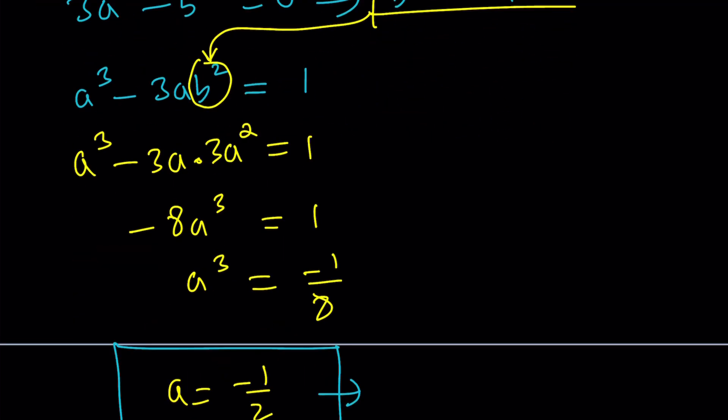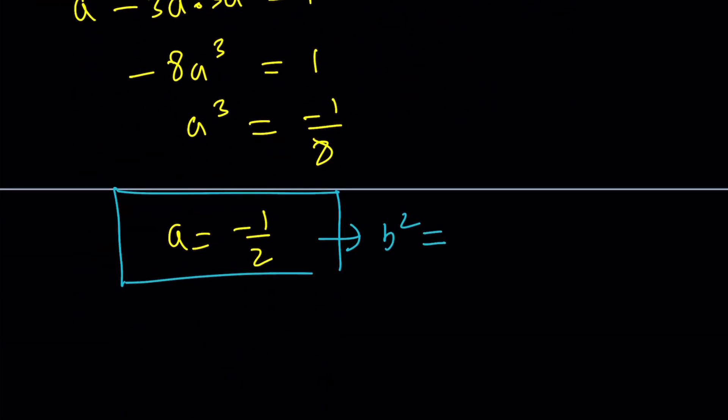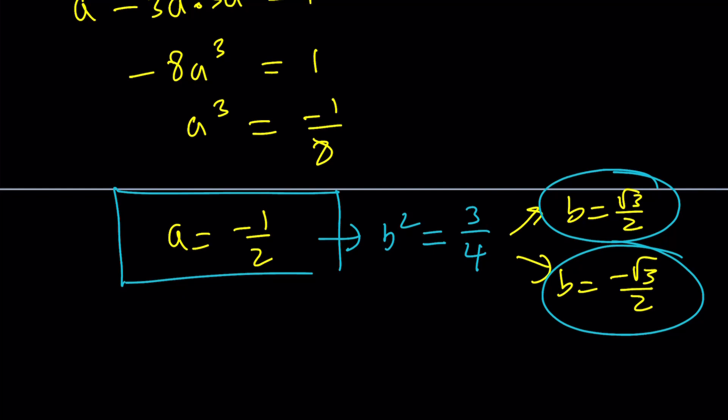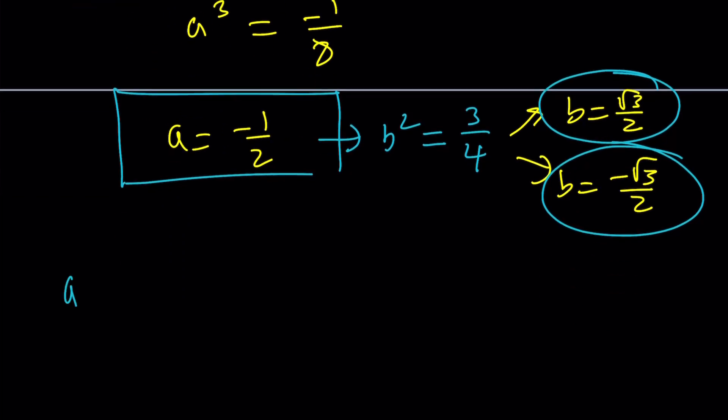Don't worry. We're going to plug it in. We have b squared equals 3a squared. So, b squared is 3 times a squared, which is 1 fourth. So, b squared is 3 fourths. We get two solutions. One of them is root 3 over 2. And the other one is the opposite. So this gives us two more solutions. And remember, a plus bi is a solution. So, it's going to be negative 1 half plus root 3 over 2i. And the other one is going to be negative 1 half minus root 3 over 2i.